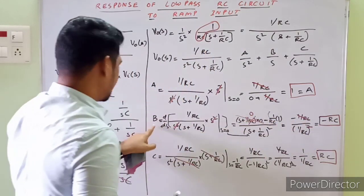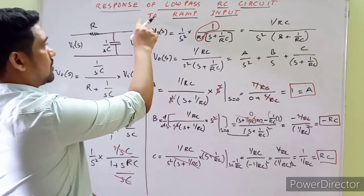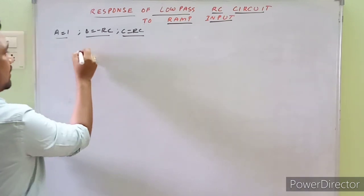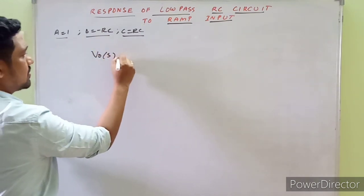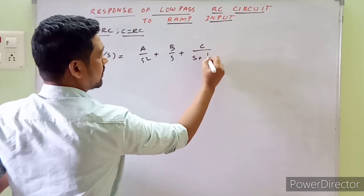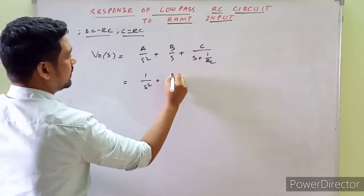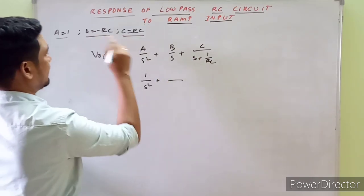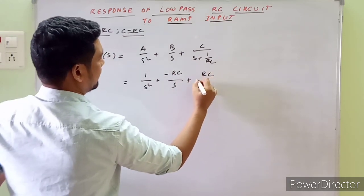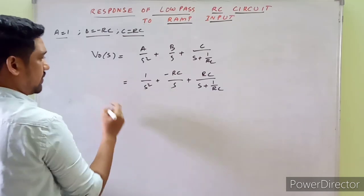So we have A = 1, B = −RC, and C = RC. Plugging these into the partial fraction expression: V₀(s) = 1/s² + (−RC)/s + RC/(s + 1/(RC)). This is the complete expression for V₀(s) in the s-domain.